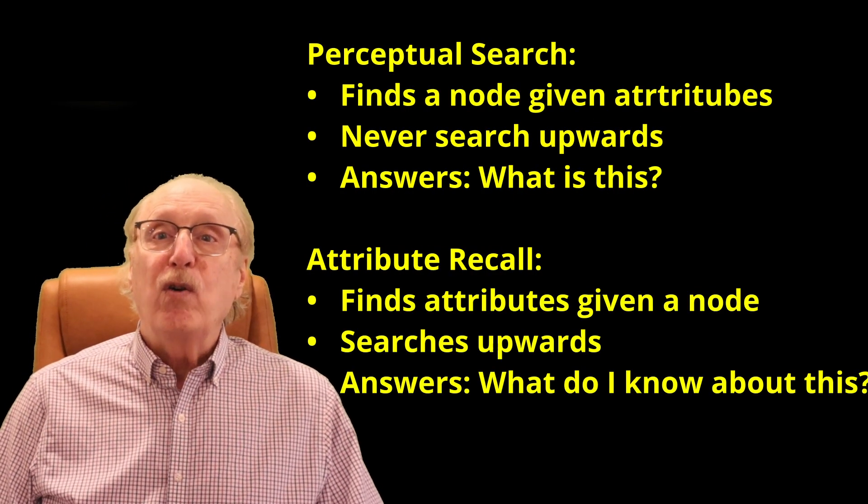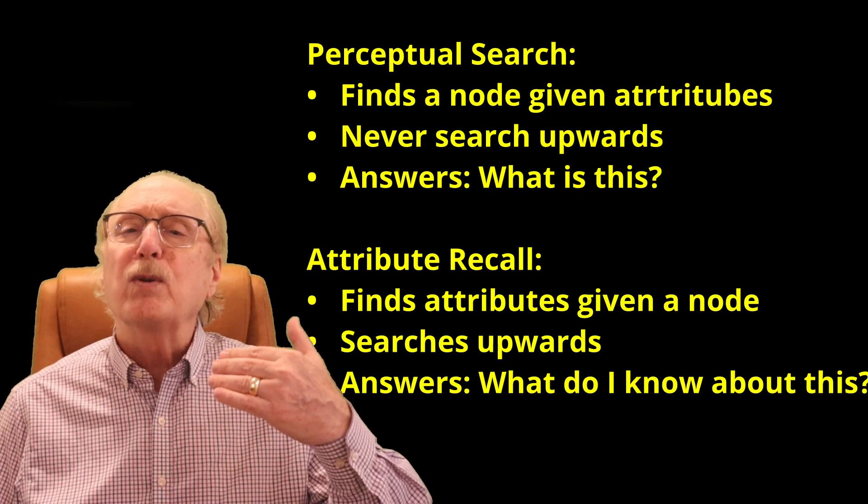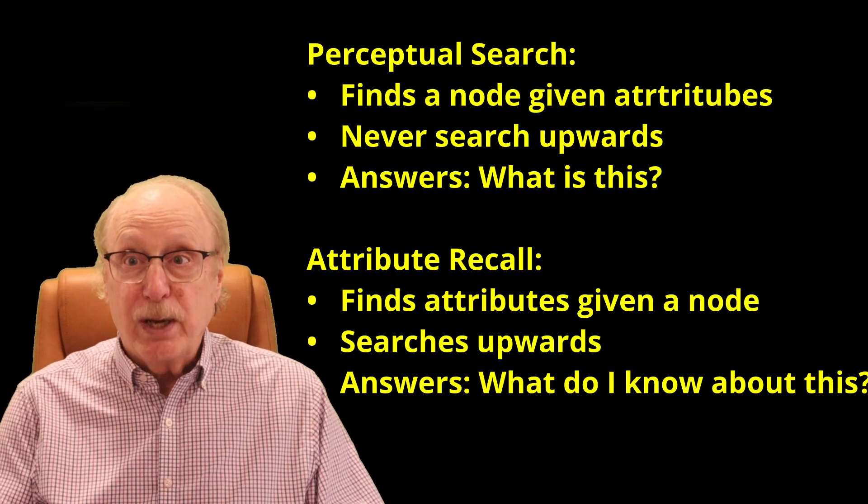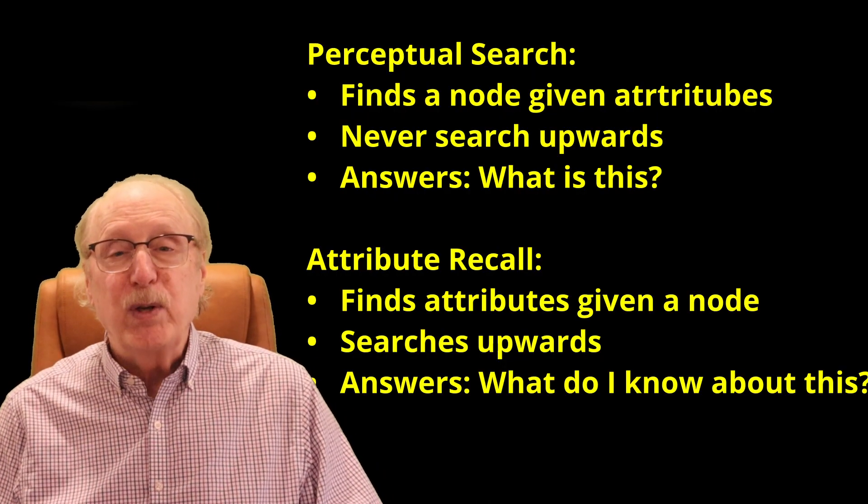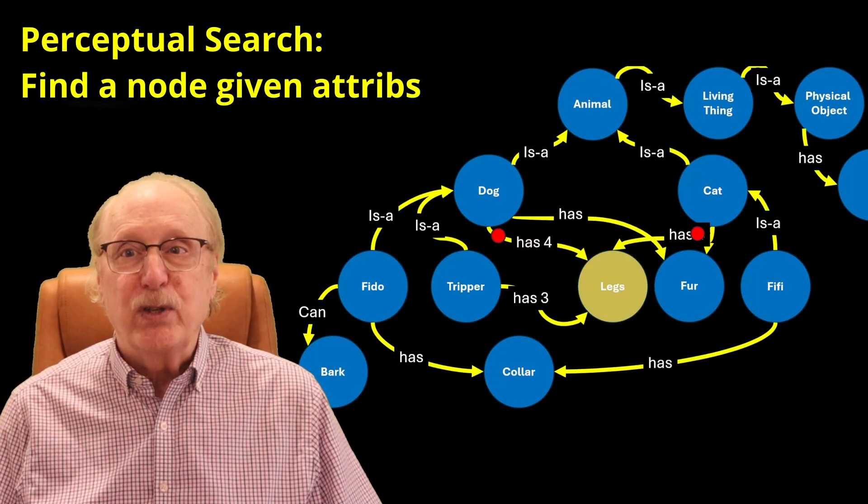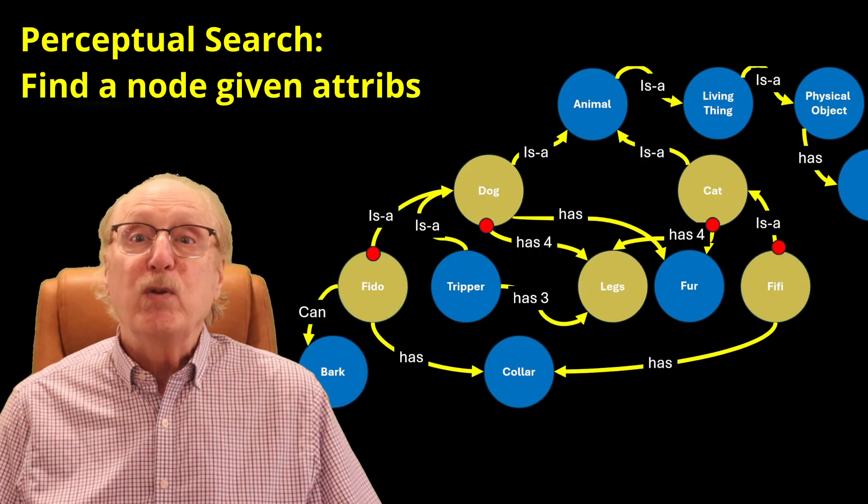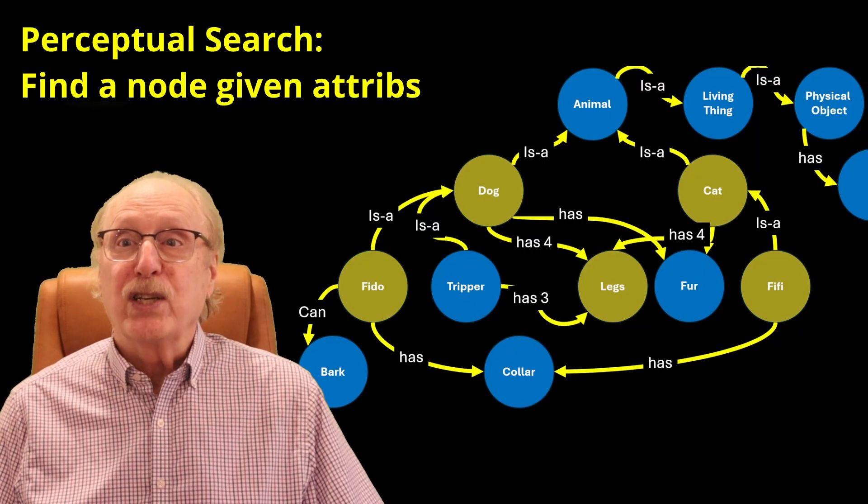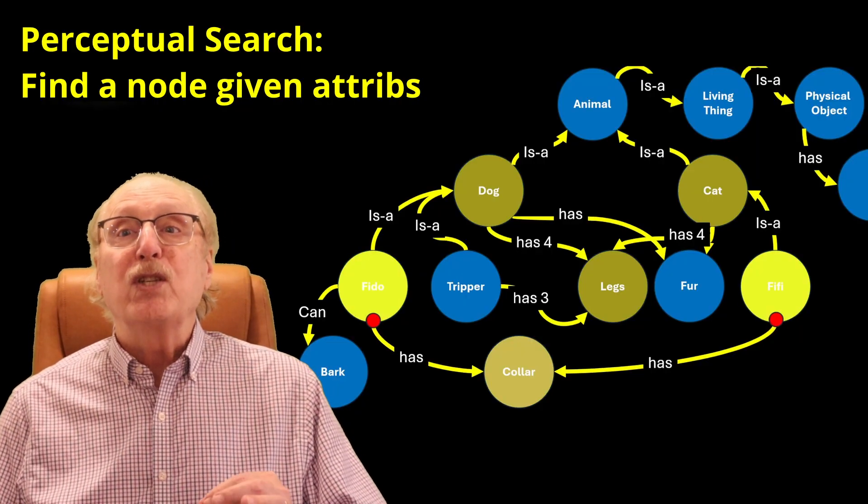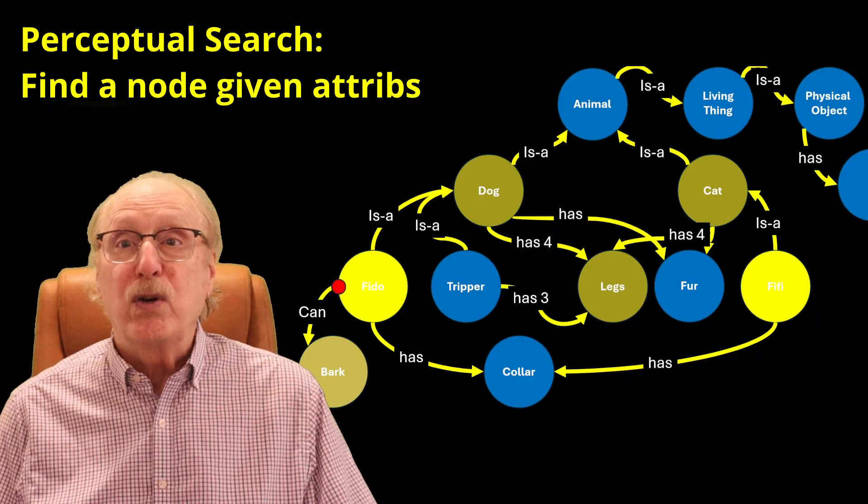In last week's video, I introduced two fundamental types of searches your brain performs continuously across its internal graph of knowledge: perceptual search and attribute recall. Perceptual search is what happens when you see several attributes in your visual field and you want to know what is this. The attributes might be facts like what has a collar and four legs, or they might be fragments of an image. These features form the seeds for a search for the closest matching nodes within the graph.